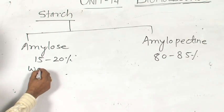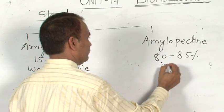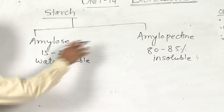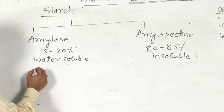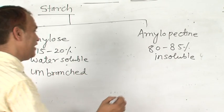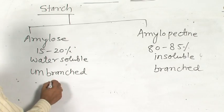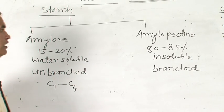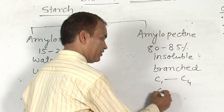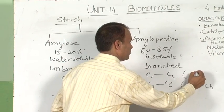Amylose is water soluble, while amylopectin is water insoluble. Both have the same monomer, D-glucose. Amylose is unbranched, whereas amylopectin is branched. The linkage in amylose is C1–C4. In amylopectin, the chain linkage is C1–C4, but the branching linkage is C1–C6.